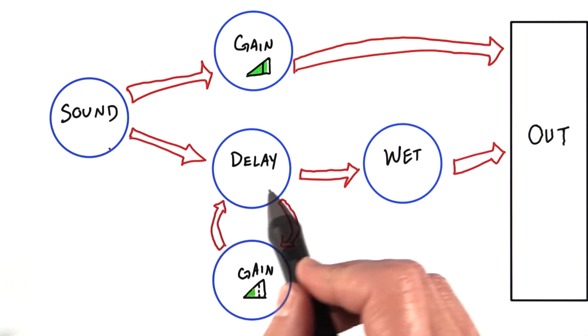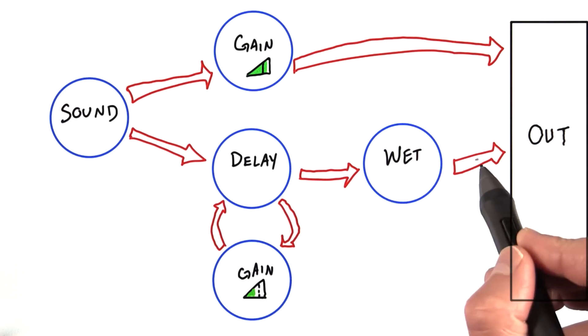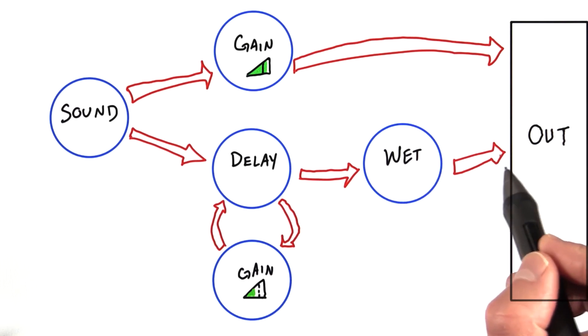In this case, you can take the sound and run it through a series of nodes to transform it into, for example, a slapback echo effect.